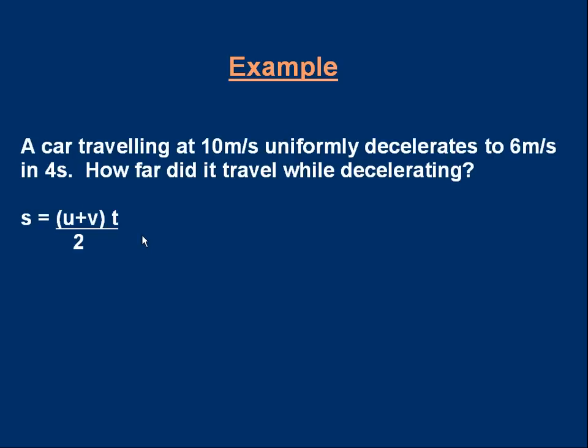Well, if we want to put the basic data down we can. u initial velocity 10 meters per second, v final velocity 6 meters per second, the time is 4 seconds. All we have to do is substitute the numbers: 10 plus 6 over 2 times 4 gives 32 meters.